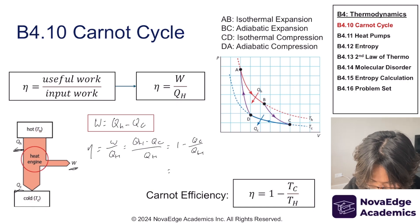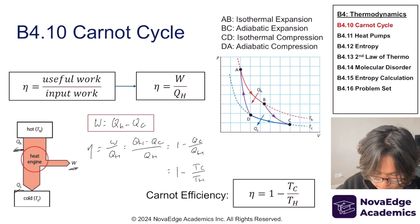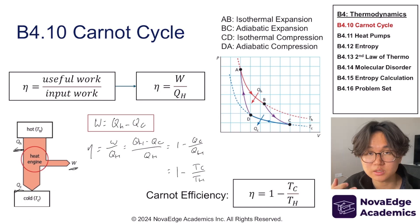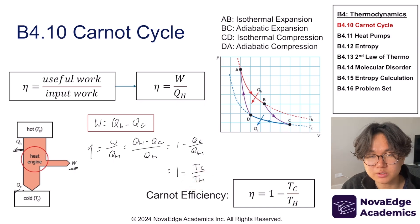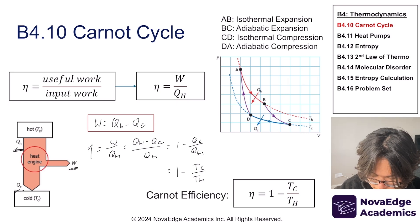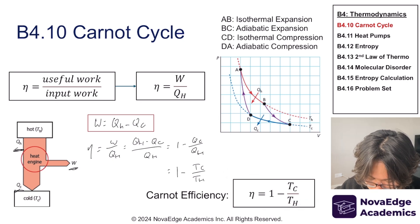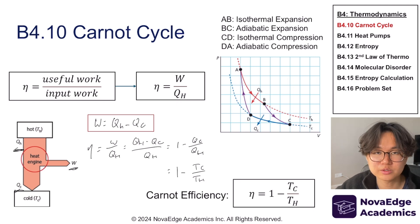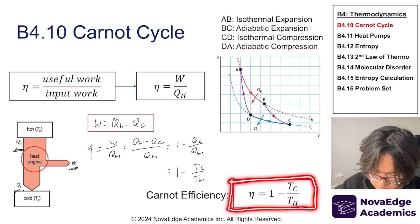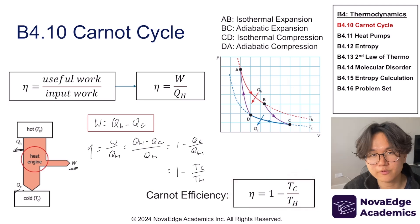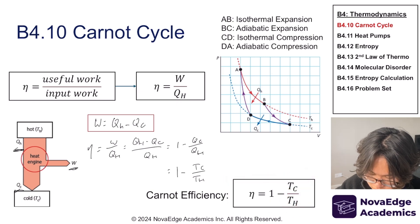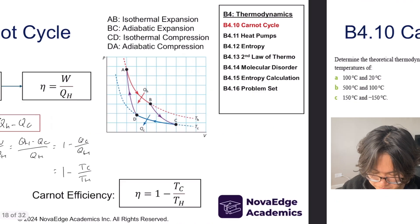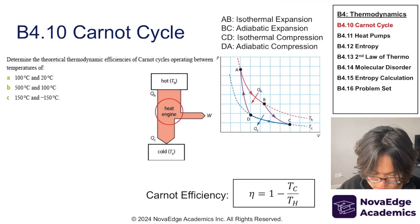Since Qh and Qc are proportional to Th and Tc respectively, we can rewrite the efficiency as one minus Tc over Th. Here Tc is the temperature of the heat sink and Th is the temperature of the heat source. This is the Carnot efficiency formula. In IB Physics, you need to know the basic concepts — that all processes are reversible, it gives maximum possible efficiency — as well as calculating efficiency when given Tc and Th, and interpreting data.